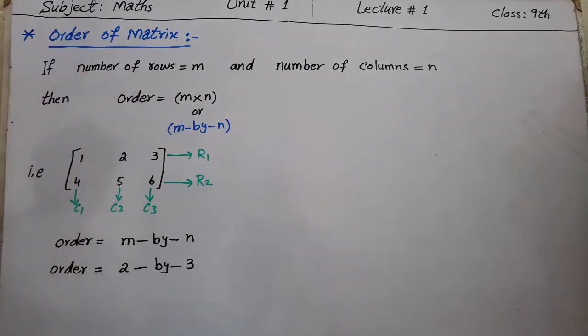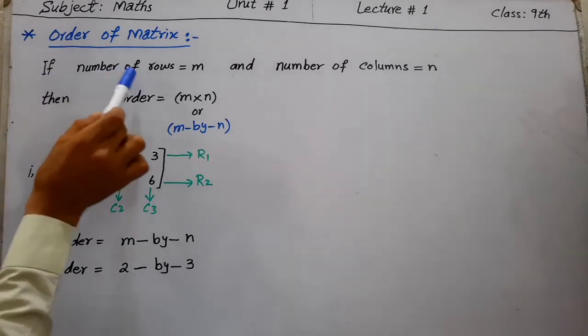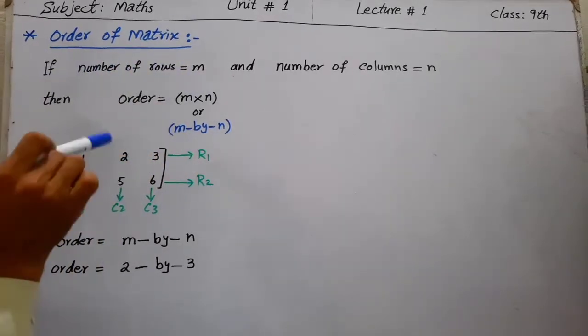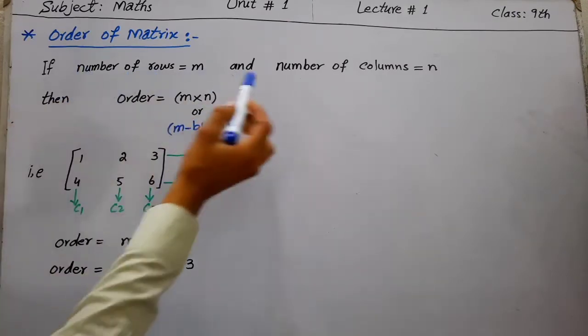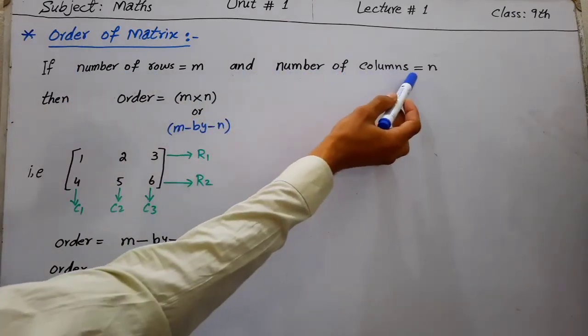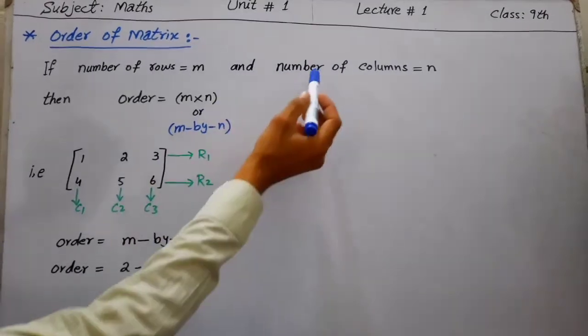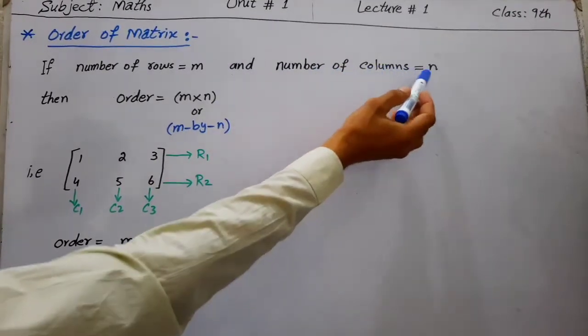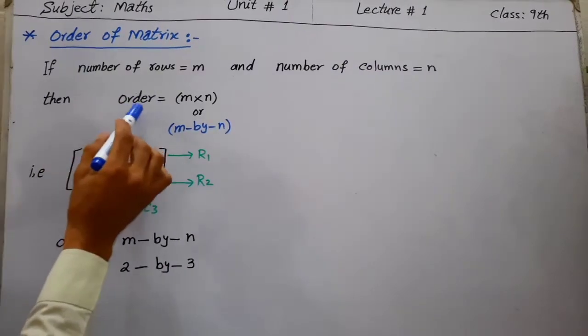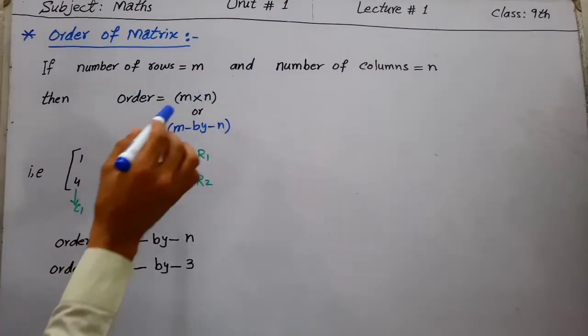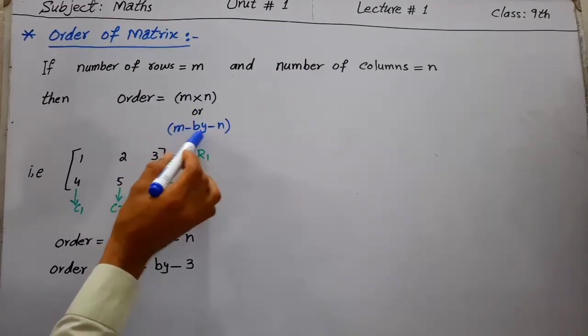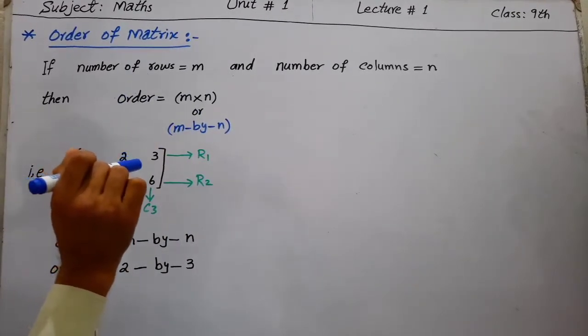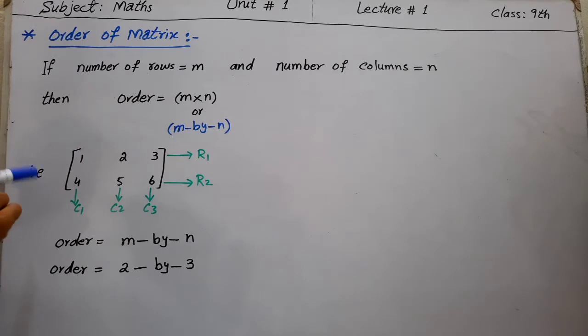If the number of rows is equal to m and the number of columns is equal to n, then the order is m by n, or m × n.